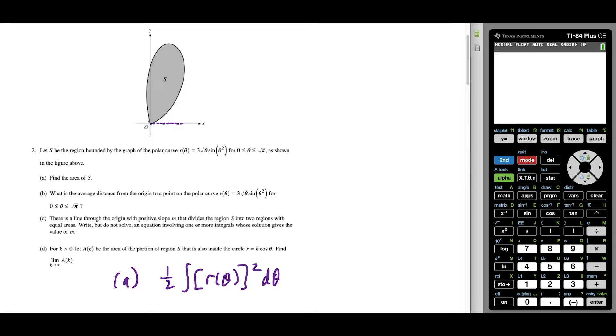to theta equals square root pi, which would be somewhere around here containing this curve. And if we use those limits, the rest is just us typing everything into the calculator.